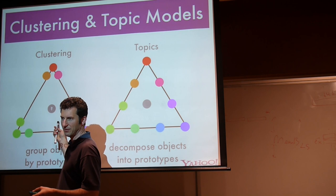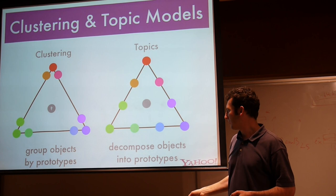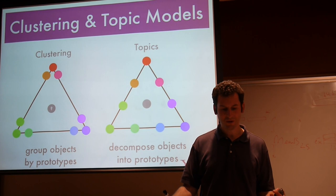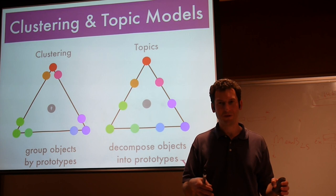With topic models, it's a little more adequate: you basically say those colors are linear mixtures of some prime colors. With three colors you get much further than with maybe 10 or 20 clusters, because you can actually reach the entire space in between. The key difference between topic models and clustering is that in topic models you try to decompose objects into combinations of prototypes, whereas in clustering you say it's either one prototype or another.